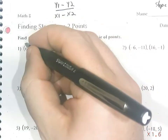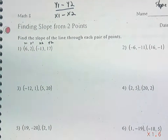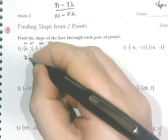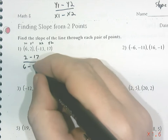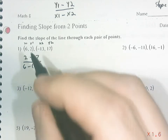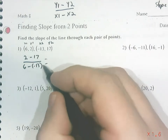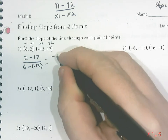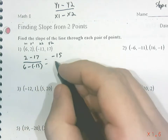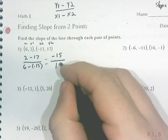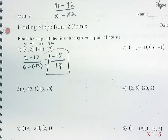For example one, the first point is x1, y1 and the second point is x2, y2. I take the y-value of the first point — 2 — minus the y-value of the second — 17 — over the x-value of the first minus the x-value of the second. That's negative 15 over 19. I can't simplify that, so the slope is negative 15 over 19.